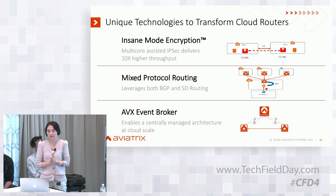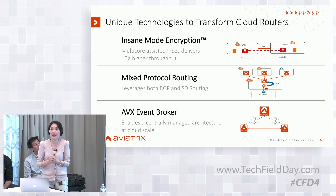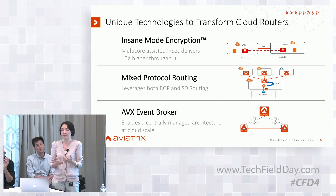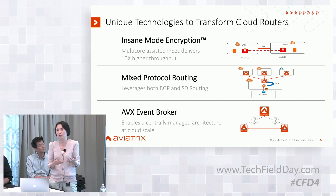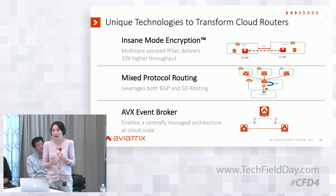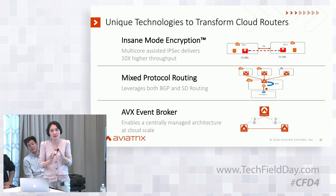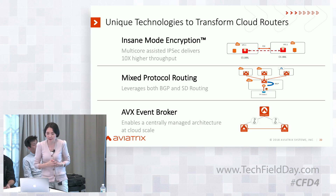I'm going to talk about three technology points. The first one is insane mode encryption. Today, in all cloud providers — in fact in all VM-based systems — encryption is capped at one gig, 1.25 gig, some say two gig, but mostly 1.25 gig. That is an industry benchmark and a barrier. Even with SRLV, the latest CPU, Skylake, all the hardware optimizations — that is still the encryption throughput cap. That is why transit solutions today are capped at one gig, no matter how many CPUs you throw at it.